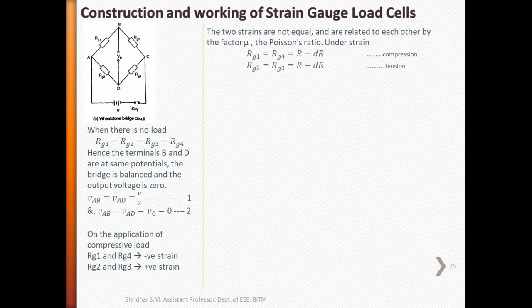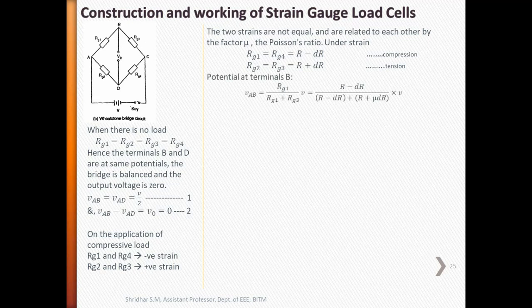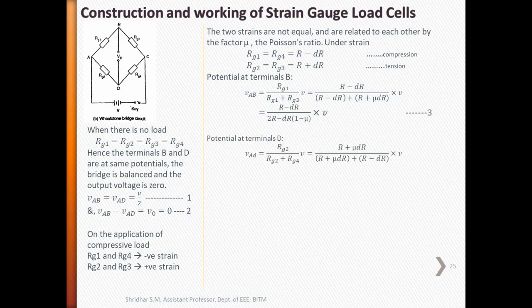The equations can be represented as these. The potential at terminal B can be given as VAB. Rearranging the above equation, we get equation 3. Similarly, the potential at terminal D can be given as VAD. Rearranging the equation, we get equation 4.